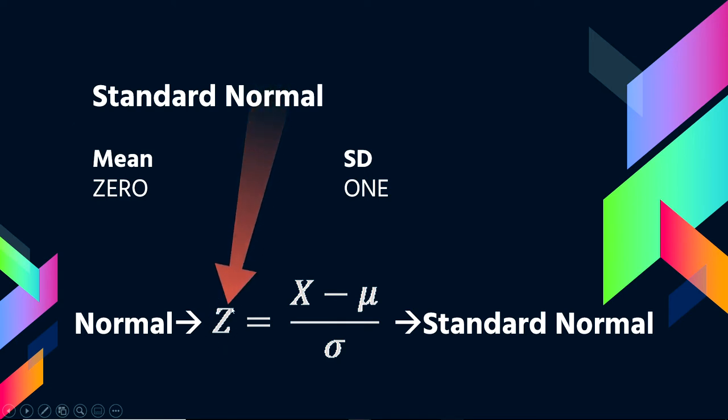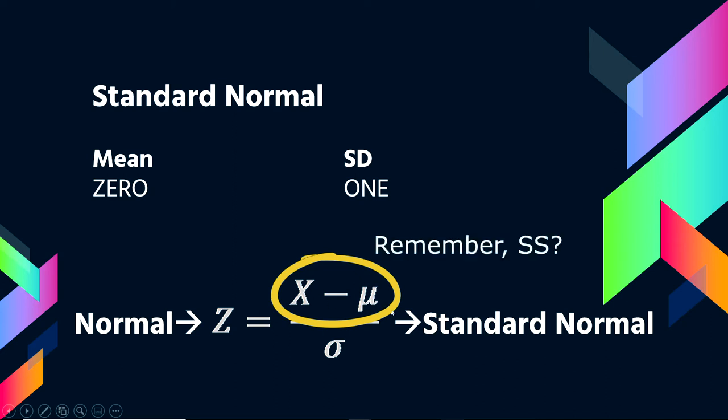The way that you make a z-score is you first center your scores, which means you subtract the mean. So the score minus the mean. And this should be kind of familiar. It's a deviation, which we saw when we calculated sum of squares. So here we have a deviation, which centers our data.